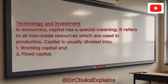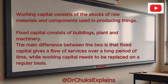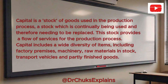Technology and investment. In economics, capital has a special meaning: it refers to all man-made resources which are used in production. Capital is usually divided into working capital and fixed capital. Working capital consists of the stocks of raw materials and components used in producing things. Fixed capital consists of buildings, plant, and machinery. The main difference between the two is that fixed capital gives a flow of services over a long period of time, while working capital needs to be replaced on a regular basis. Working capital is much more mobile than fixed capital, meaning it can be used for other purposes much more easily. Capital is a stock of goods used in the production process — a stock which is continually being used and therefore needing to be replaced.